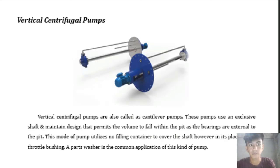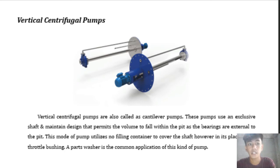Vertical centrifugal pumps are also called cantilever pumps. These pumps use an exclusive shaft and bearing design that permits the volute to fall within the pit, while the bearings remain external to the pit. This type of pump uses no filling container to cover the shaft; instead, it uses a throttle bushing. A parts washer is a common application of this kind of pump.